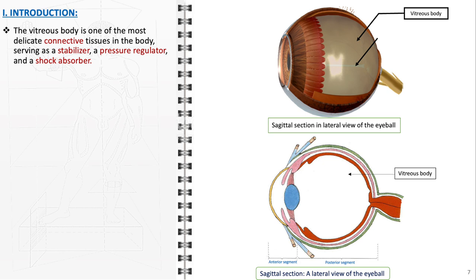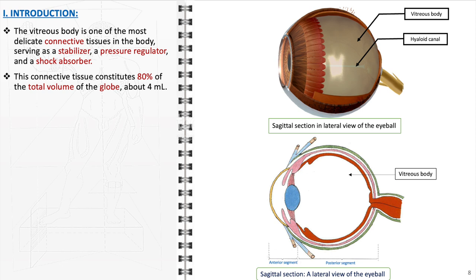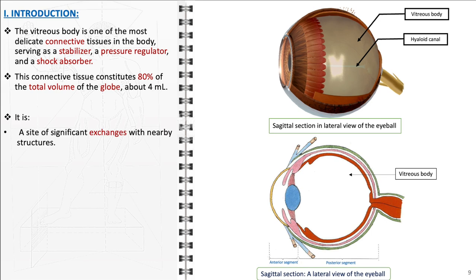Occupying the space between the lens and the retina, the vitreous body constitutes approximately 80% of the eye's volume, or about 4 milliliters, thus defining the eye's form. It facilitates metabolic exchanges with the retina and the lens, along with other adjacent tissues, despite its avascular nature.